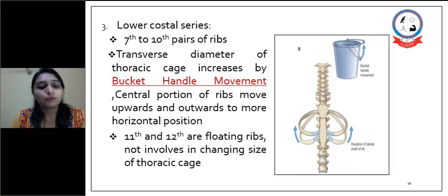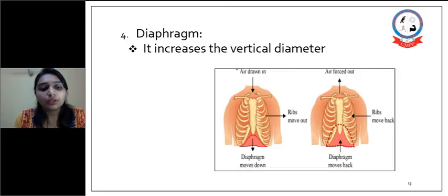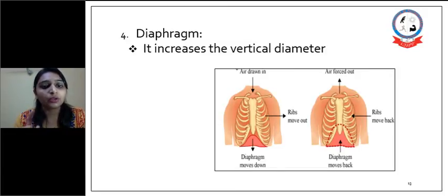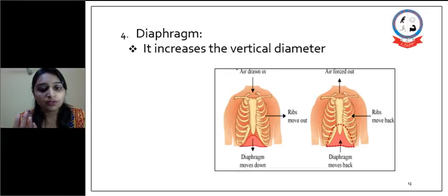The 11th and 12th ribs are floating ribs and do not take part in the change in size of the thoracic cage. Last is the diaphragm, which is responsible for the increase in vertical diameter. The diaphragm originates from all over the inner aspect of the thoracic cage — posteriorly from the lower thoracic vertebrae, laterally on the internal side of the ribs, and anteriorly on the posterior aspect of the xiphoid sternum.